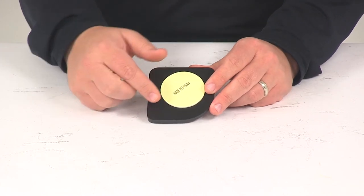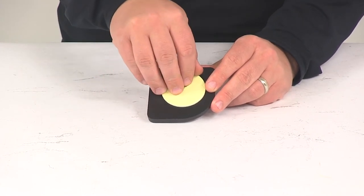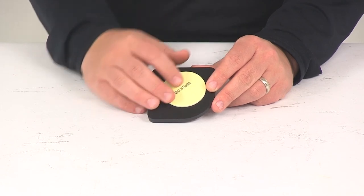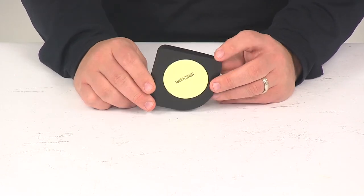Finally, when you're ready to permanently install it, just peel off the protector back here on the adhesive backing and then you can stick it to your mounting surface.